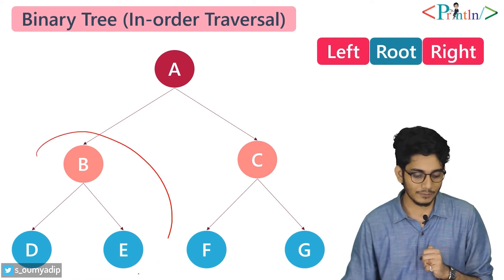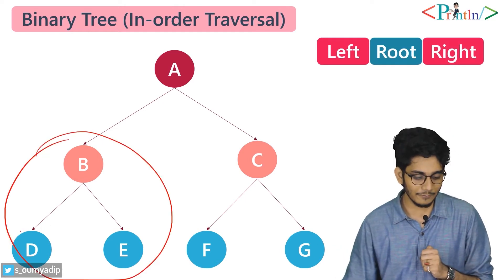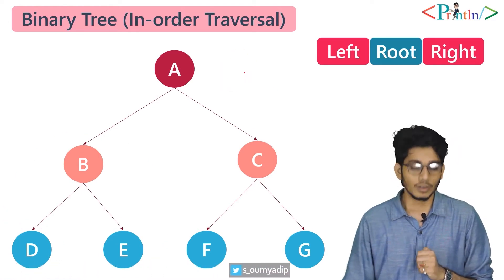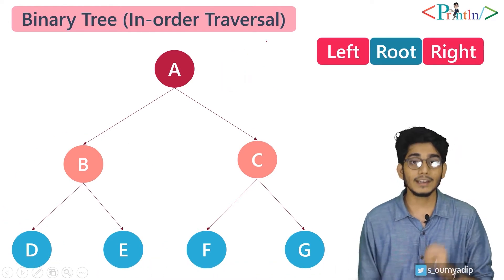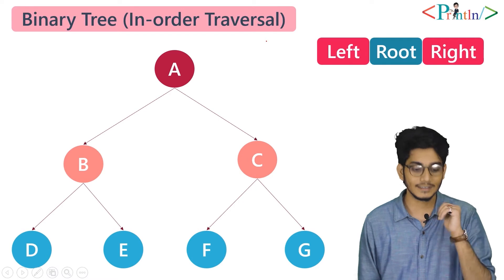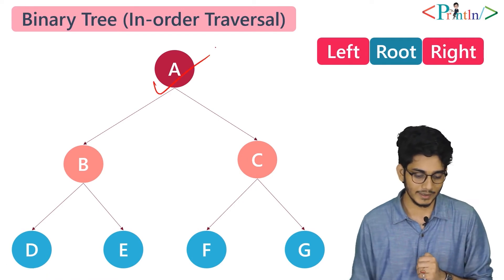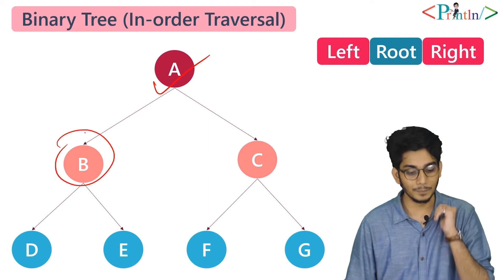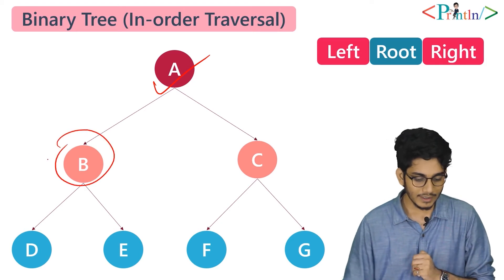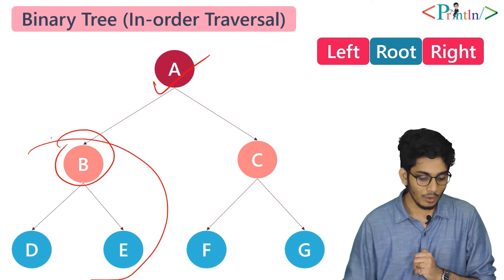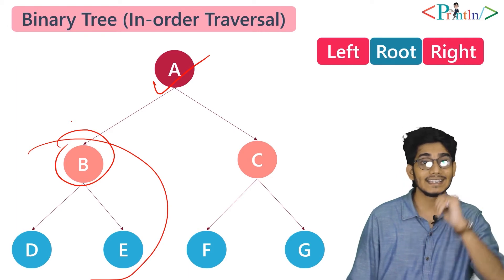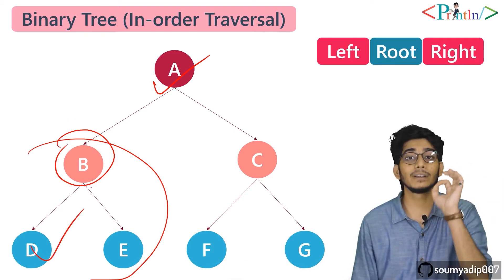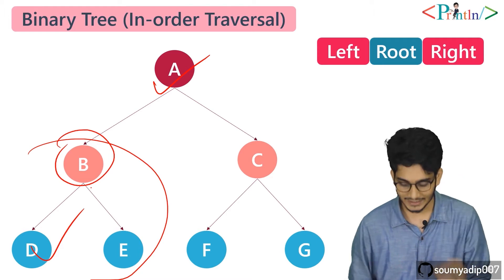In this process, we have to call every subtree. So at first we will go for A. What we will do? We will traverse the left. A has B at its left, then we will go for B. What B has at its left? B has D. So at first, what we will print? We will print D.